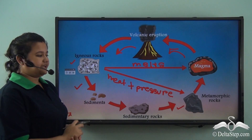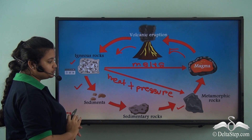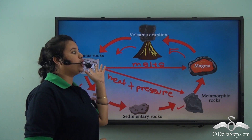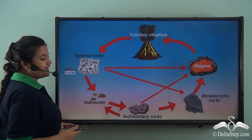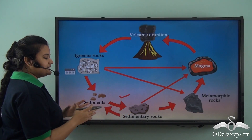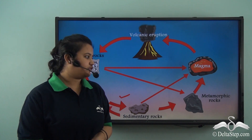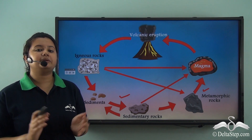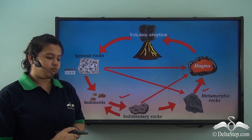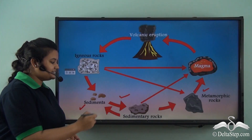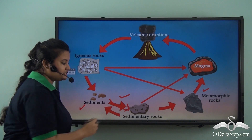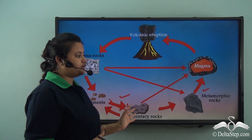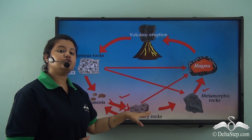So igneous rocks not only form sedimentary rocks, but they also form metamorphic rocks and they also melt into magma. Sedimentary rocks get metamorphosed into metamorphic rock, but sedimentary rocks are also denuded by natural forces like wind and water and form sediments. Thus the sediments which form the sedimentary rocks can again be denuded into sediments. So sedimentary rocks form metamorphic rocks and sedimentary rocks also form sediments.